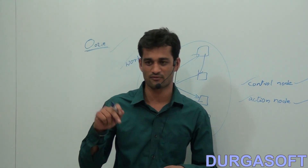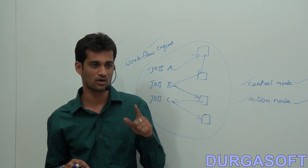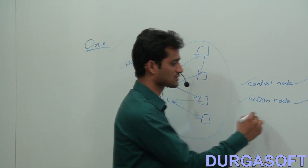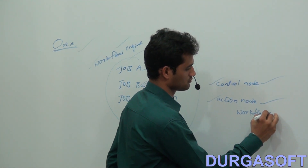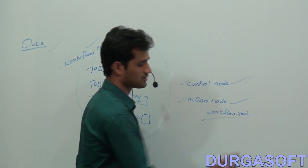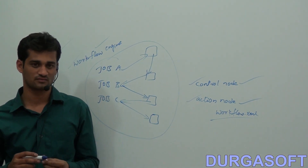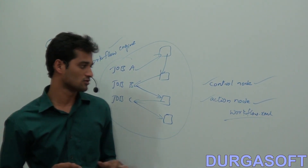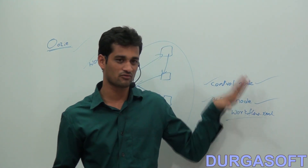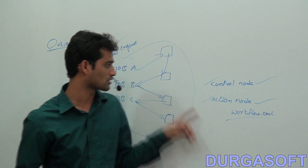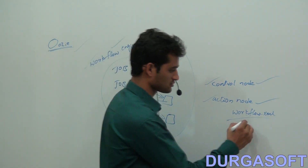So Oozie is a workflow engine. If you want to run Oozie, we need to have one XML file — the workflow.xml file. This workflow.xml file will have all your configurations about all your jobs.